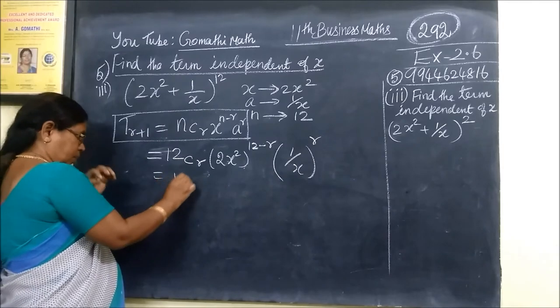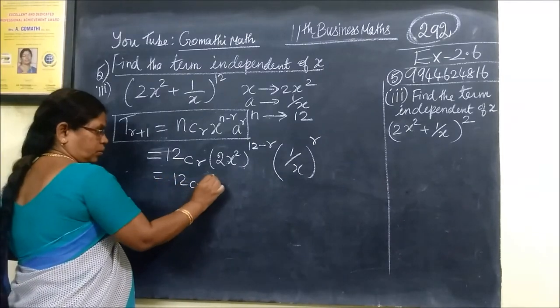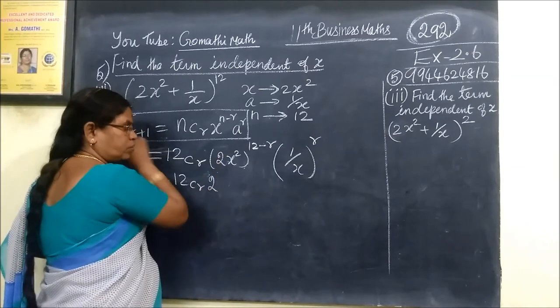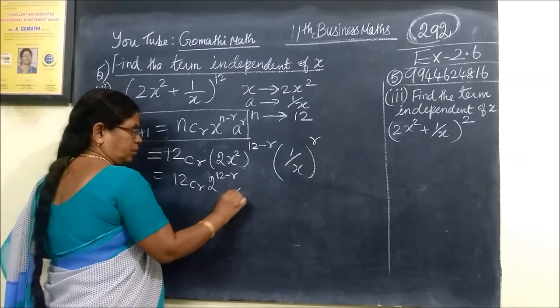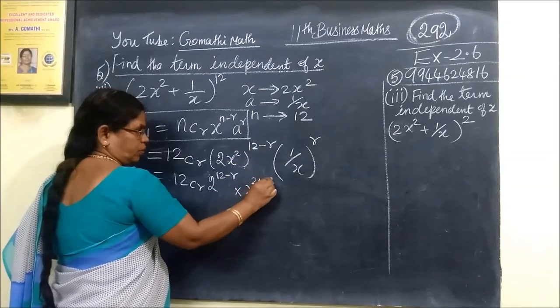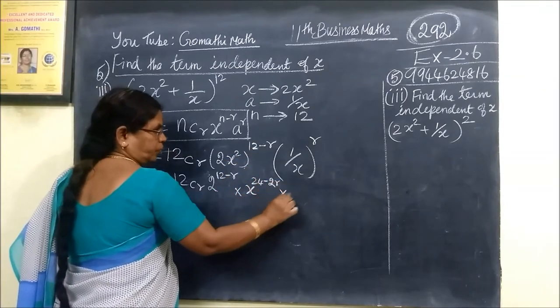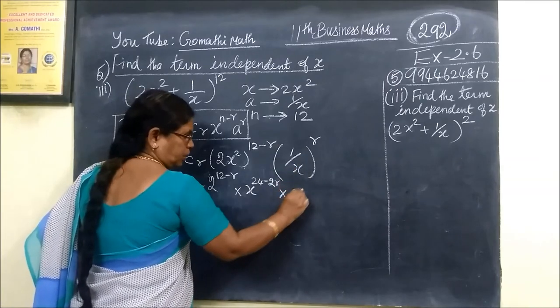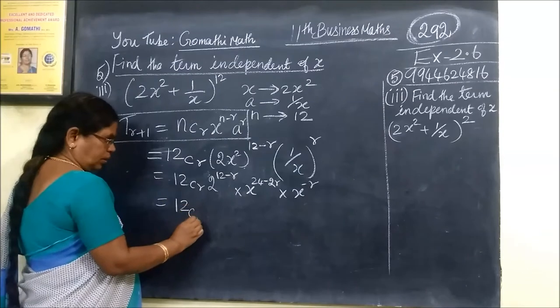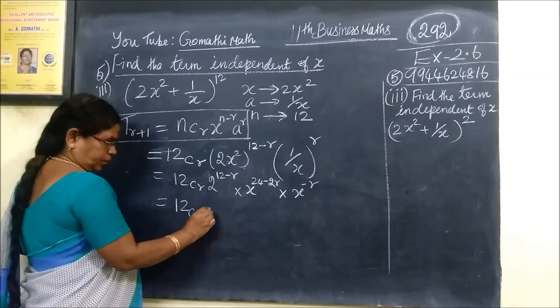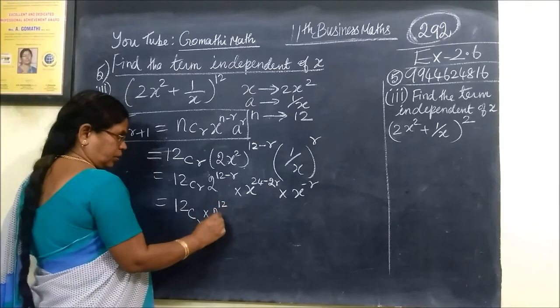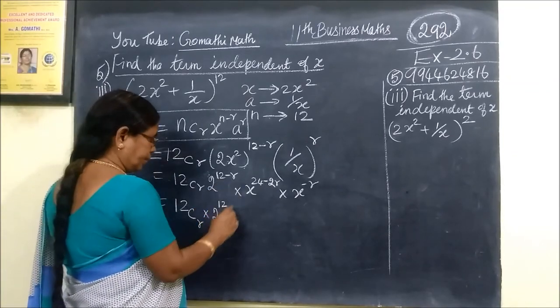So if you expand 12C_R, then 2 power 12 minus R, so 2 power 12 minus R into x power 12 minus R, into x power minus R. So 12C_R then 2 power 12 minus R.